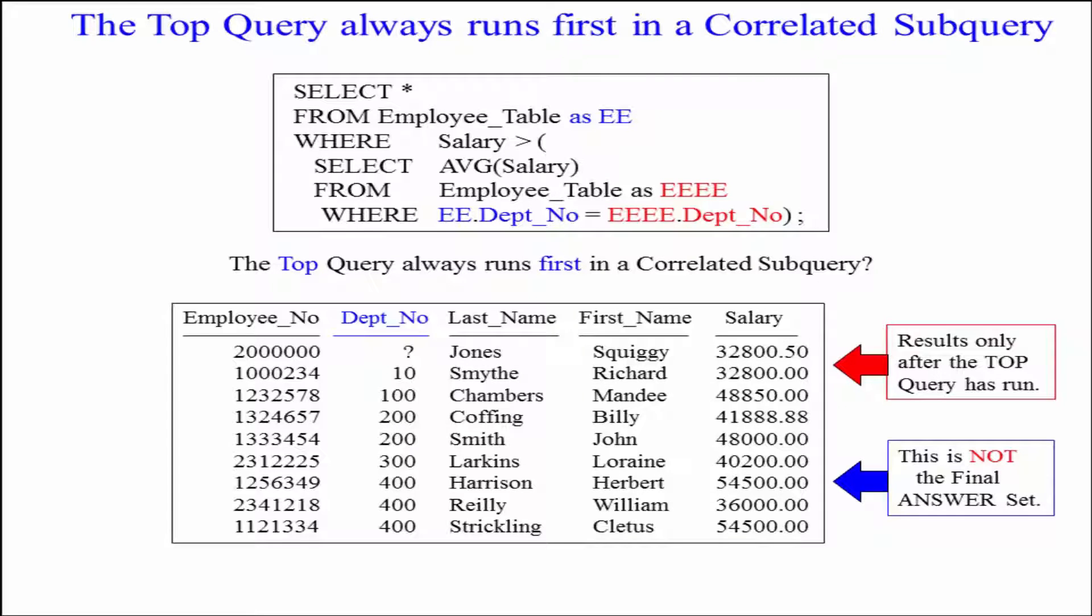They're in the null department. Let's see anybody in null departments, their average salary running on the bottom. Then let's do the tens. Then the 100s. Oh, there's multiple people in 200. But we'll only run the bottom query one time for everybody in department 200, one time for everybody in 300, one time for everybody in 400.